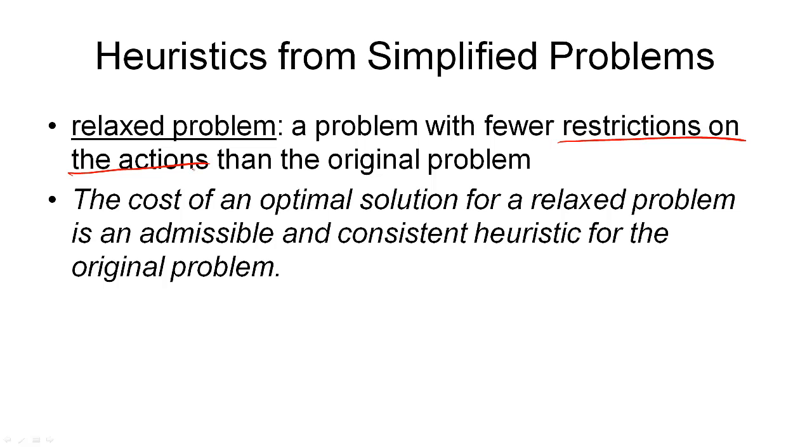And then the following should be fairly obvious to see. Namely that the cost of an optimal solution for a relaxed problem is an admissible heuristic for the original problem. In fact, it's admissible and consistent. You should see why it is admissible. Because the optimal solution for our original problem is also a solution for our relaxed problem. We've only relaxed the restrictions on the actions.